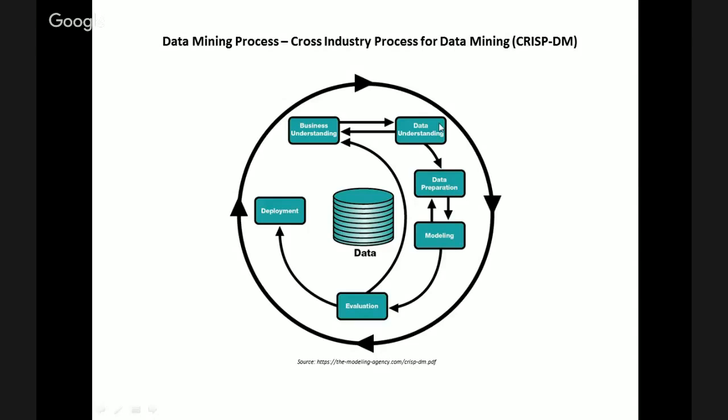I will now shift gears to the second phase, which is the data understanding stage. This second stage requires the data scientist to actually acquire data. Before the data scientist does anything with the data, he or she first needs to understand the strengths and limitations of the data, because rarely will the data exactly match the problem that he or she is trying to solve.